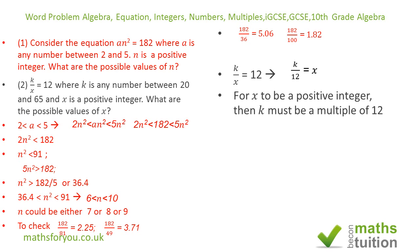For x to be an integer, k must be a multiple of 12, and that multiple of 12 has got to be between the values of 20 and 65. So we're looking for multiples of 12 greater than 20 and less than 65.